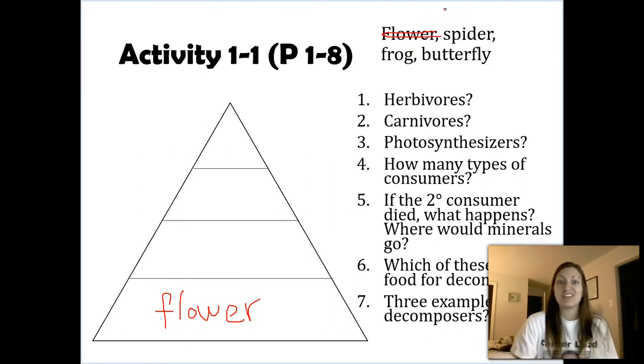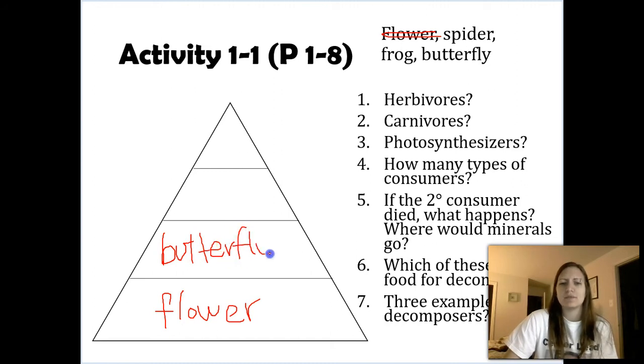Now I know butterflies, just like bees, go flower to flower and get nectar. They don't eat insects or anything like that, so butterfly is going to go next. That makes it a primary consumer, so let me label these as well. I'm going to put a P next to this one, P just to stand for producer. Next to this butterfly, I'm going to put a one degree, meaning primary consumer.